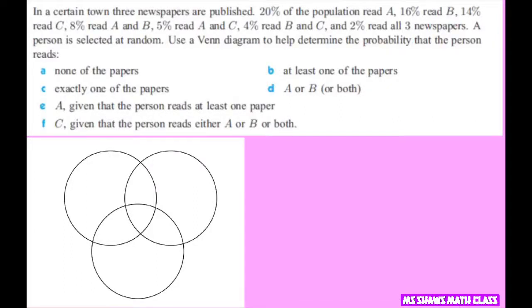Hi everyone! In a certain town three newspapers are published. 20% of the population read A. So let's label our Venn diagram A. And B is 16% and C is 8%. And then we're given more information.